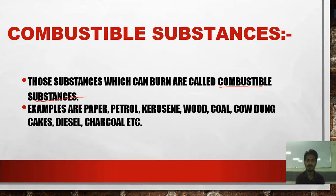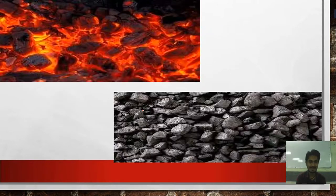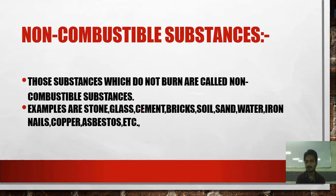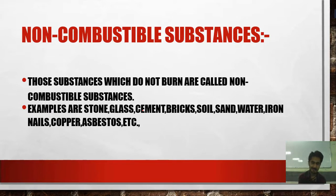Non-combustible substances are those which do not burn and are called non-combustible substances. Examples include stone, glass, cement, bricks, soil, sand, water, iron nails, copper, and asbestos. Question number three is: explain combustible and non-combustible substances.